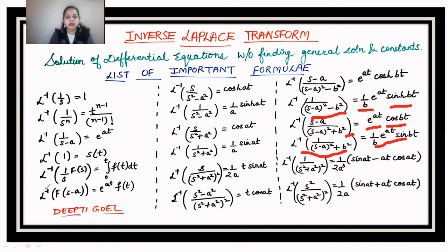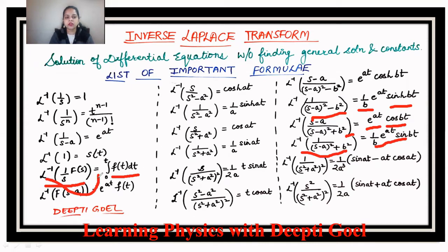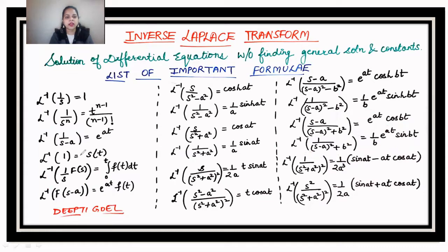The Laplace inverse of F(s)/s is the integral function — it equals the integral from 0 to t of f(t) dt, because the Laplace of the integral from 0 to t of f(t) dt is F(s)/s. Taking the Laplace to the other side gives this result, and in this way you can create as many inverse formulas as you want.